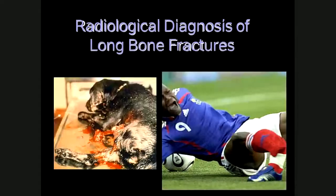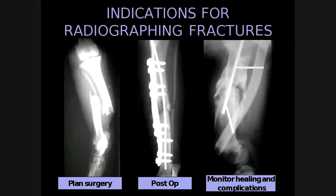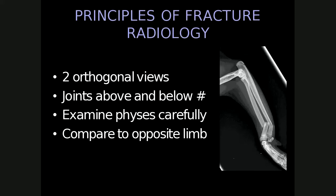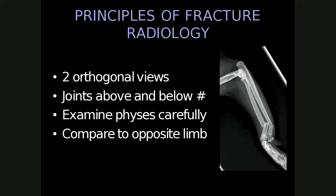The first section covers the radiology of fractures of the long bones. Reasons for performing radiographs of fractures include planning surgery to evaluate the degree of bone and soft tissue trauma; obtaining post-op views to evaluate the degree and adequacy of alignment and reduction; taking radiographs at certain time intervals to monitor healing; and assessing for possible complications with fracture repair. Standard principles include always obtaining two orthogonal views, and including the joints above and below the fracture to assess rotation.